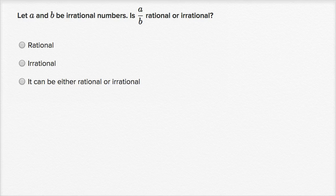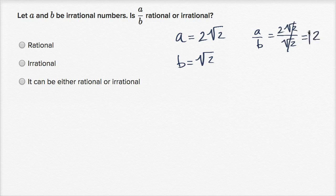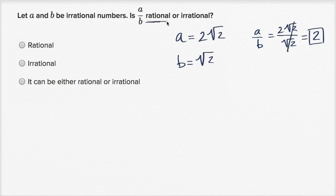Let's imagine a world where A is equal to two square roots of two, and B is equal to the square root of two. Well, in that world, A over B would be two square roots of two over the square root of two, which would be two — which is very much a rational number. I can write that as two over one, so A over B is rational here even though both A and B were irrational.